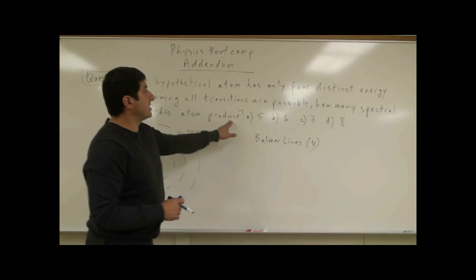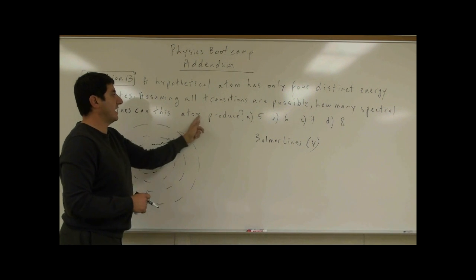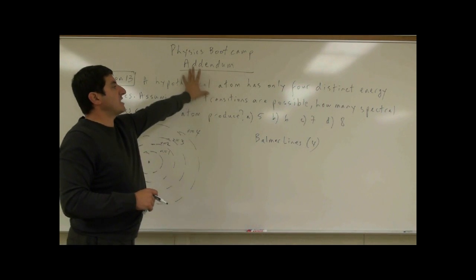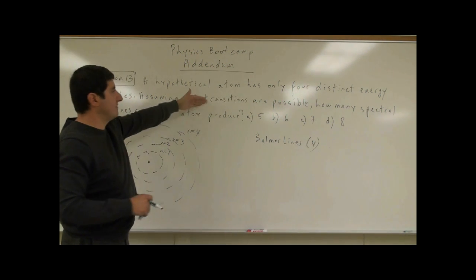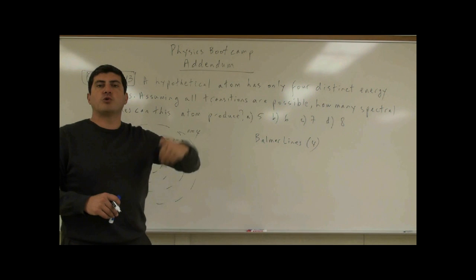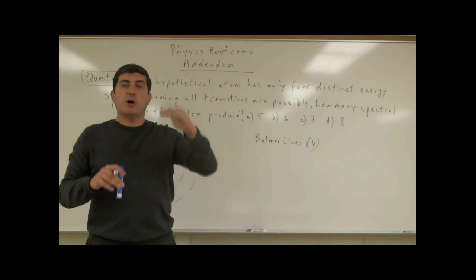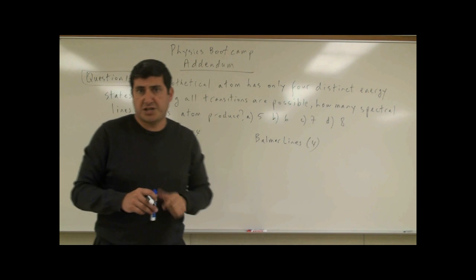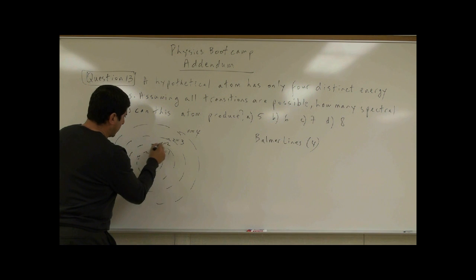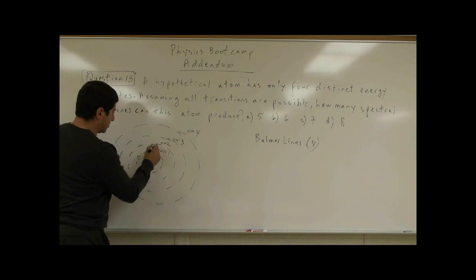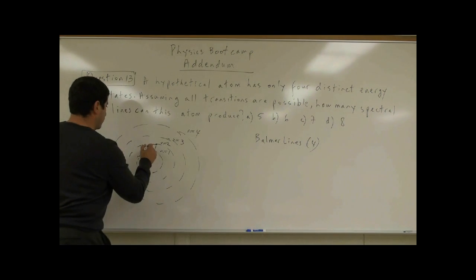This problem is not asking how many visible spectral lines this atom can produce. We don't have enough information to solve that because we aren't given its energy states, so we don't know whether these lines are visible or not. We just have to count how many possible transitions the electron can make. For example, it could go from n equals 2 down to n equals 1 — that's one jump.